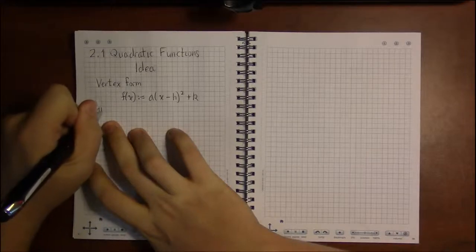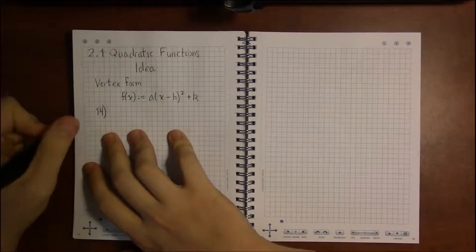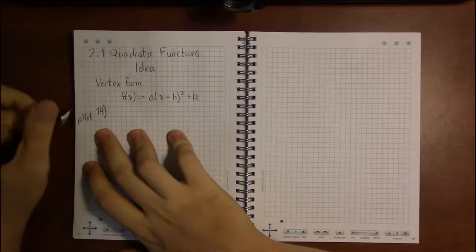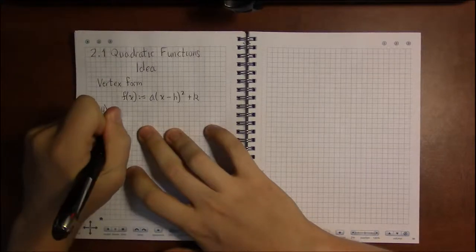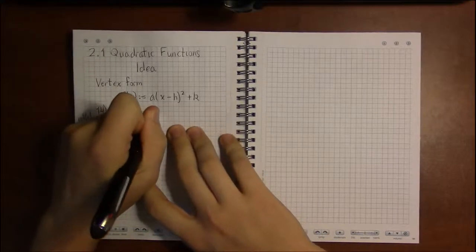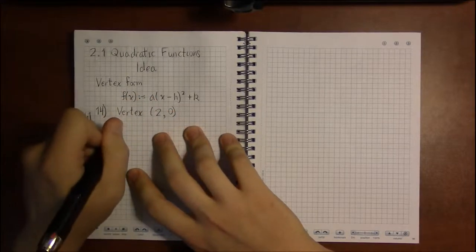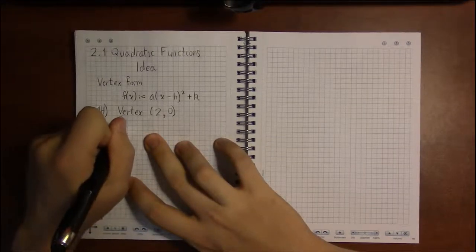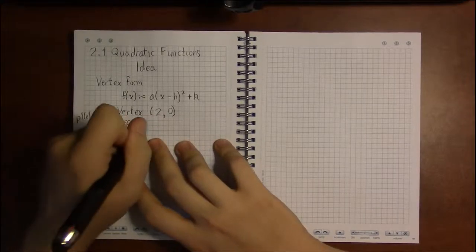For example, if we take a look at problem 14 of section 2.1, which is on page 161, we're told that the vertex of the parabola is located at the point (2, 0) and that the parabola passes through the point (1, 3).